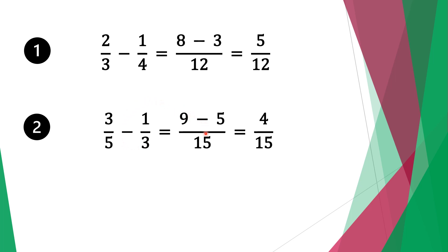Do the same thing for the second fraction: fifteen divided by three is five, five times one is five. Nine minus five is four. Move along the fifteen as it is, so our solution is four over fifteen.